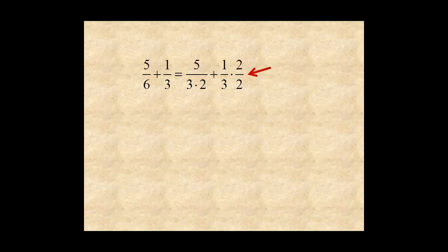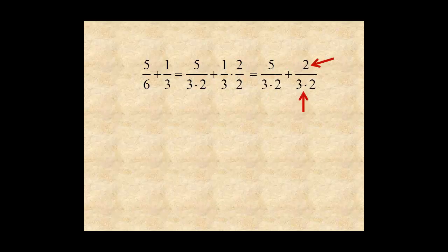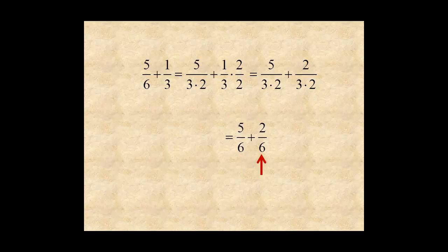This gives 5 over 6 plus 2 over 6, which is equal to 7 over 6.